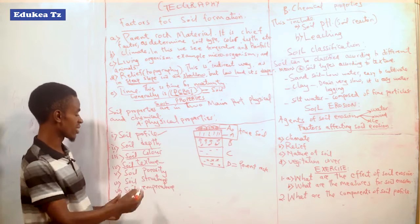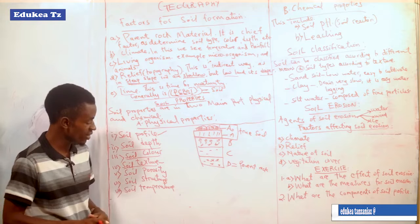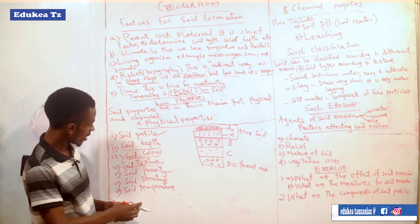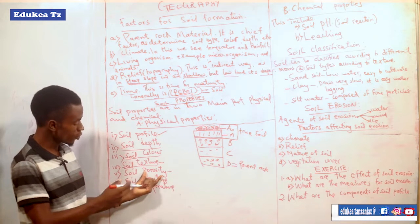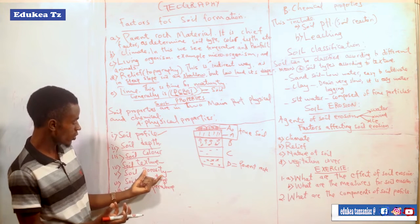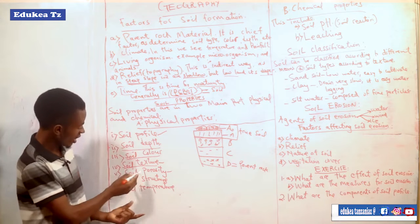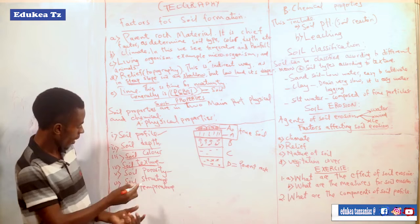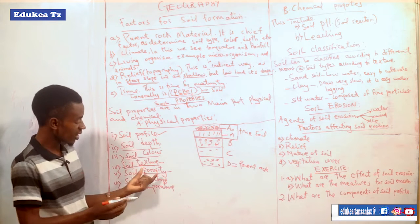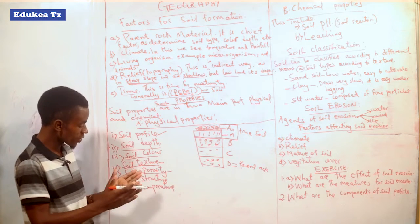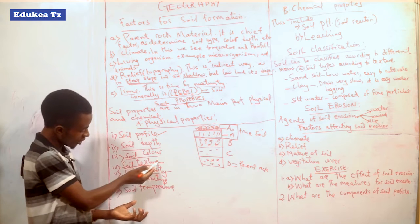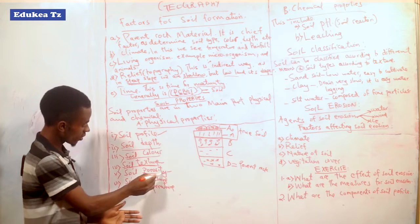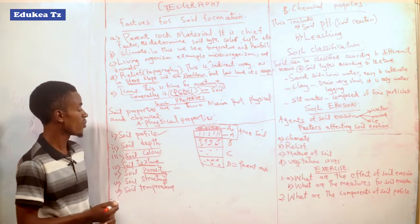Also there is soil porosity. Soil porosity means the volume of space between one particle of the soil and another particle. In texture we talk about the size of the soil, but in porosity we talk about the volume space between one particle and another. That volume space in general we call soil porosity. Each type of soil has that feature.